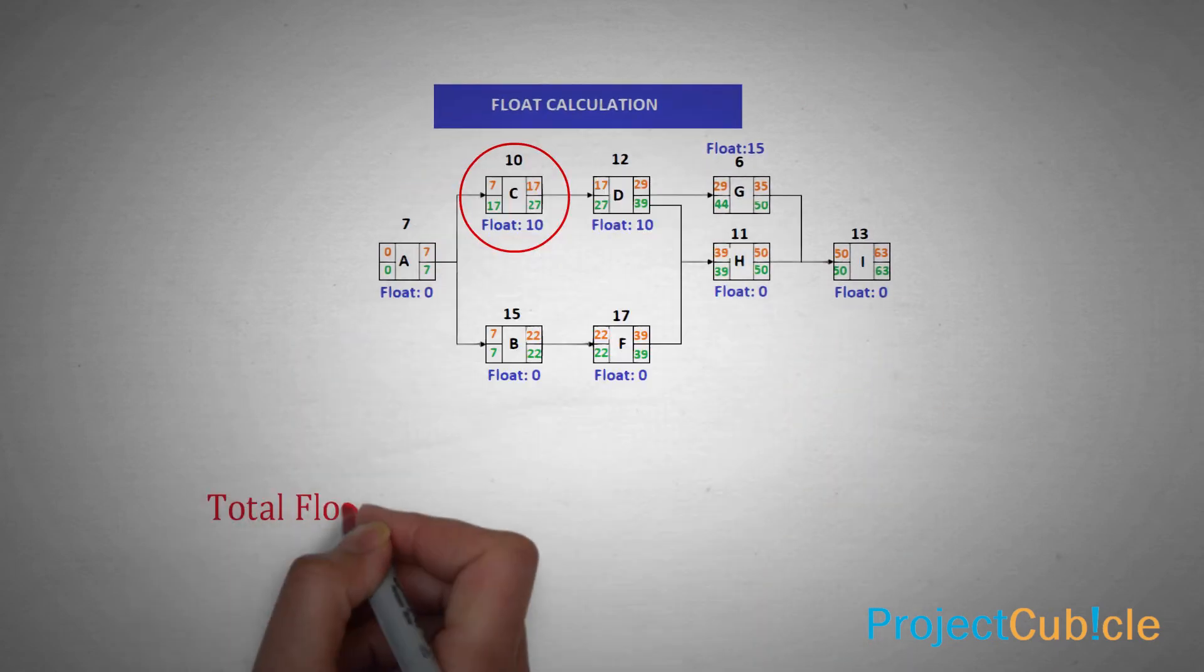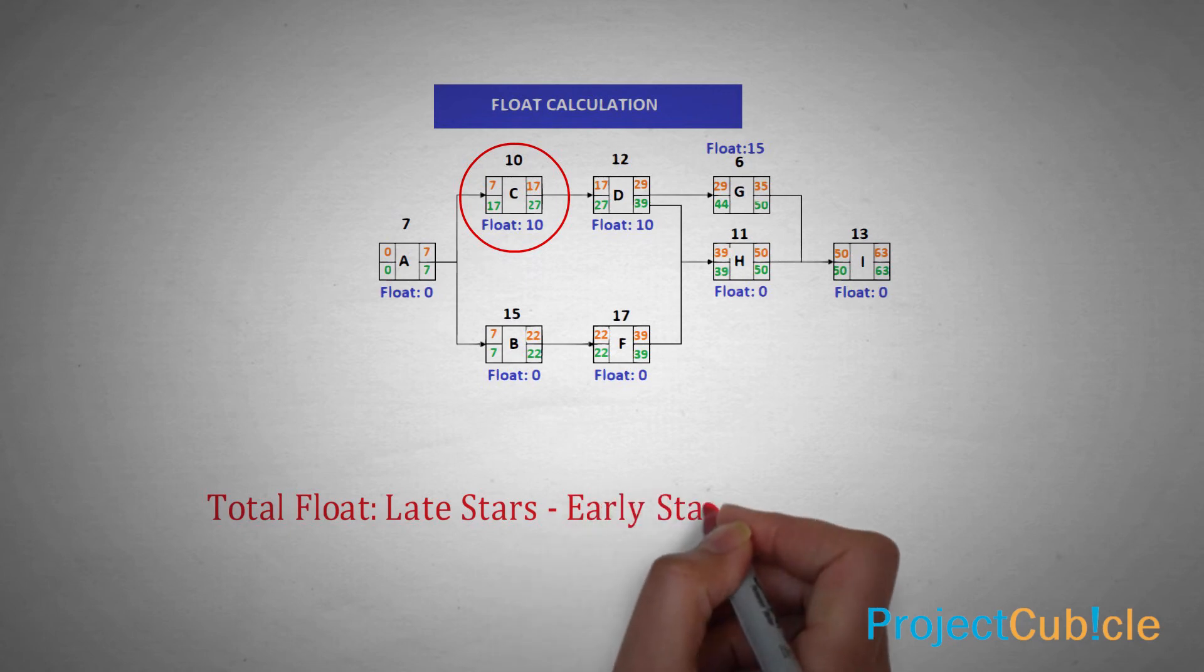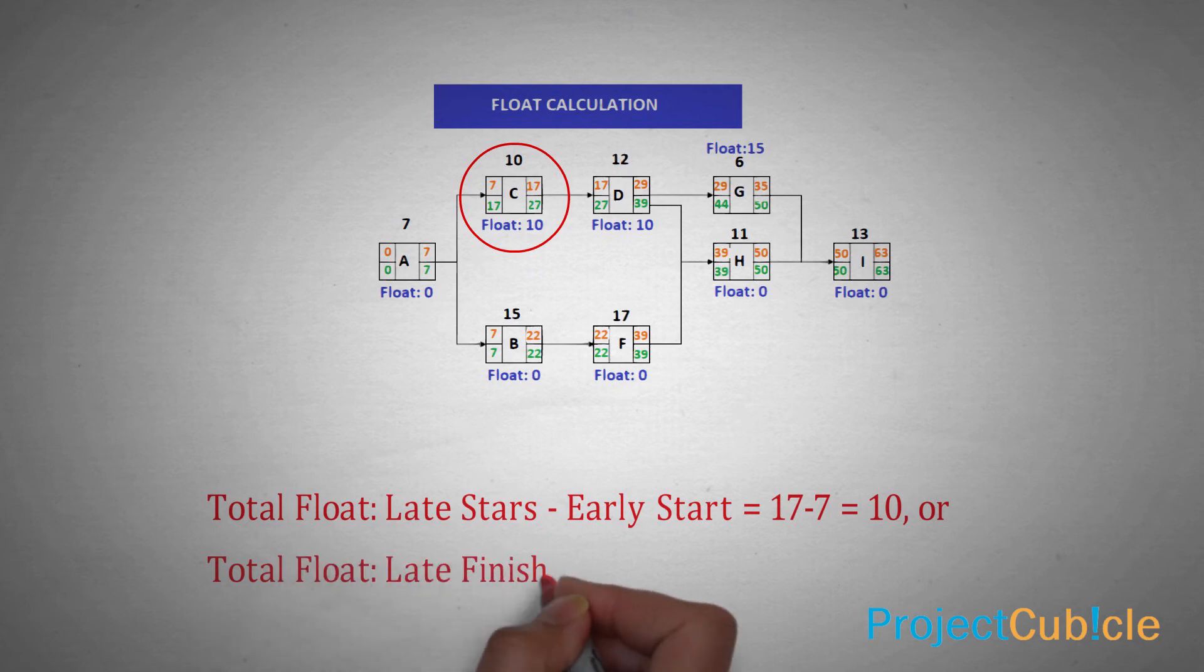For the activity C, total float. Late start minus early start equals 17 minus 7 equals 10. Or total float. Late finish minus early finish equals 27 minus 17 equals 10.